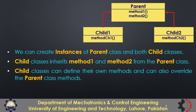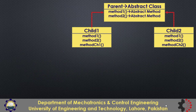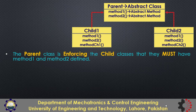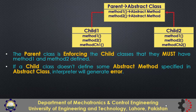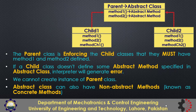Now let's see how things change when the parent class is an abstract class with two abstract methods. Firstly, it means that the parent class is enforcing the child classes to define method1 and method2. If a child class doesn't define some abstract method specified in the abstract class, the interpreter will generate an error. Secondly, we cannot create an instance of the parent class. Abstract class can also have non-abstract methods, which are also known as concrete methods.